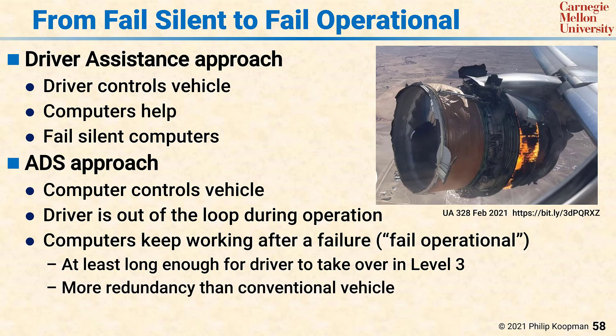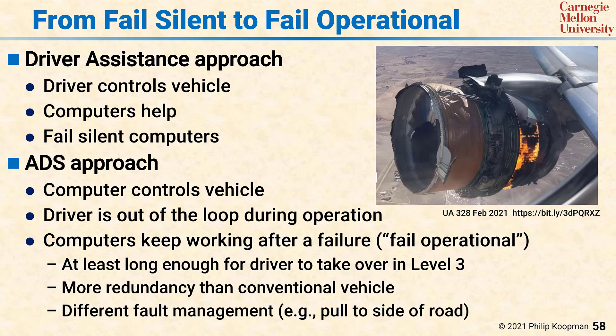That means that if one computer dies, there needs to be another computer ready to take over. That requires potentially more redundancy than a conventional vehicle, and it requires different fault management. On automated vehicles, computers no longer just fail silent. They have to fail operational and keep working at least for a little while to do something to mitigate the failure, rather than leaving the vehicle uncontrolled at highway speed.